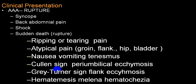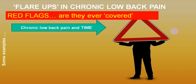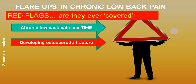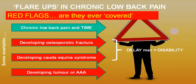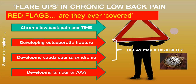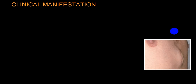Red flag signs include chronic low back pain, osteoporotic fractures, and cauda equina syndrome — always look for abdominal aortic aneurysms. The earlier you detect it, the more complications you prevent; the main dangerous complication is death. Suspect, examine, and investigate as early as possible.